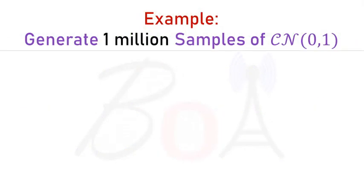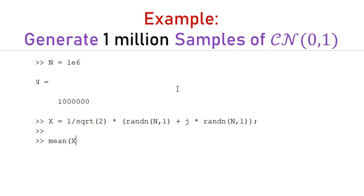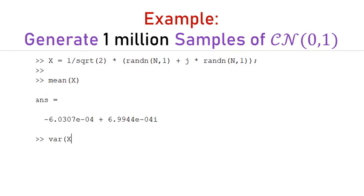Let's now take a couple of examples. Let's generate one million samples of a complex Gaussian random variable with mean 0 and variance 1 in MATLAB. Let's check the mean and the variance. You can see that the mean is nearly equal to 0 and variance is equal to 1, as desired.